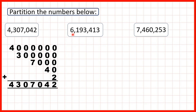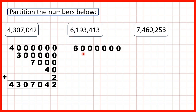Now let's try 6,193,413. The 6 is in our millions so that's 6,000,000 — 6 with 6 zeros on the end because we have 6 digits after the 6. The 1 is in our hundred thousands so that's 100,000 — 1 followed by 5 zeros because we have 5 place values after the 1 in our hundred thousands.